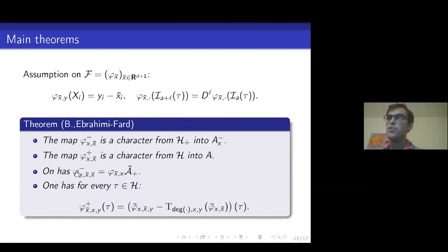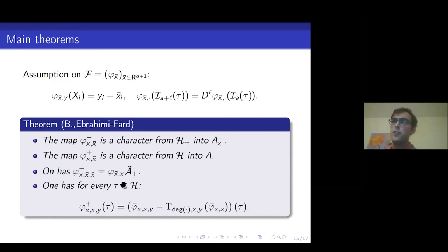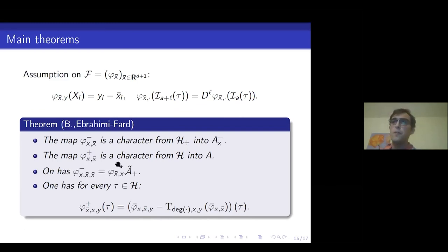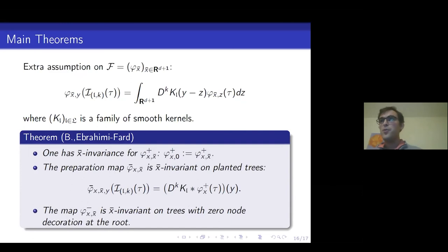Moreover, one shows that φ^− is actually obtained from φ by applying the twisted antipode — this is exactly what is seen in regularity structures and what we claimed to be the algebraic Birkhoff factorization. The Bogolubov recursion matches the recursion done with the algebraic object of the twisted antipode. One can also obtain a nice expression for φ^+ via the preparation map, which is multiplicative on planted trees. So from this recursion starting with the family of characters, one recovers the character properties expected of φ^− and φ^+, and the twisted antipode expression.